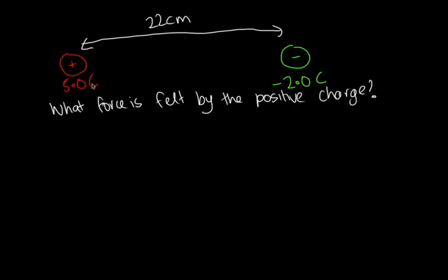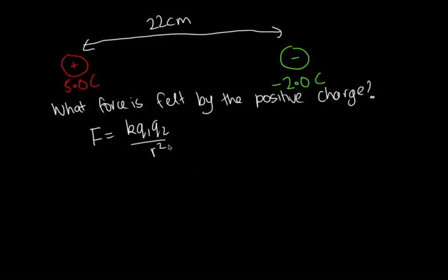So to calculate the size of this force, we have to use Coulomb's Law. F is equal to k q1 q2 over r squared. Now k is Coulomb's constant. So in a test, you'd be told what it was. So k is given by 8.988 times 10 to the 9.